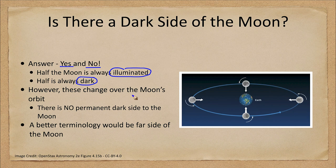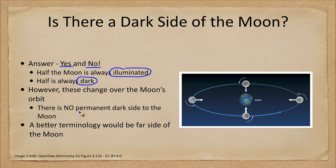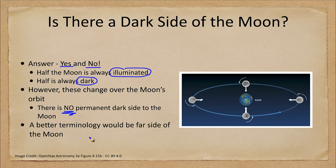However, these will change over the moon's orbit. There is no permanent dark side to the moon. So perhaps a better terminology would be the far side of the moon.